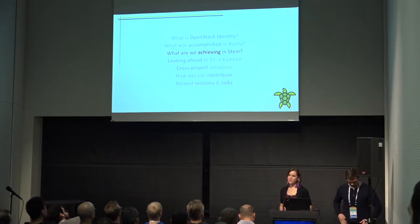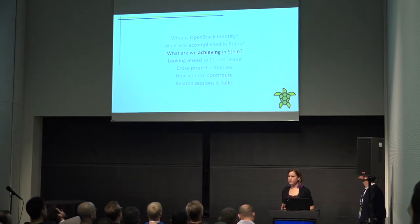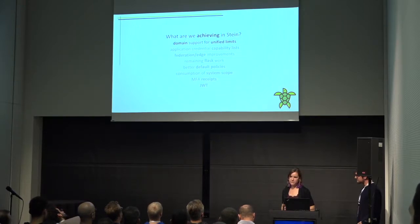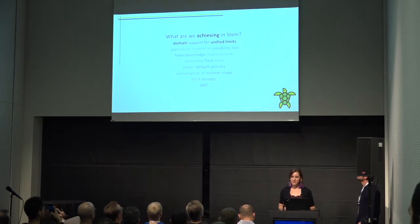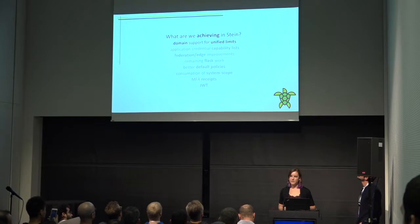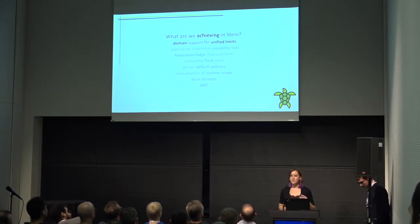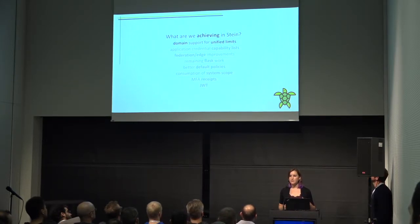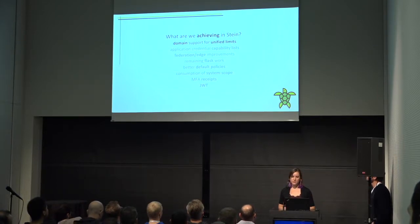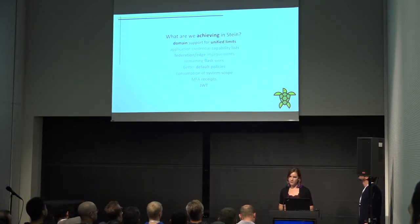For this Stein cycle, we're going to be building on all the work we did for Unified Limits last cycle by adding domain support for Unified Limits. The two-level limit hierarchy that we have now currently only supports two levels of projects. We'd like it to be so that the top level could be a domain, since that's a pretty common way of organizing your resources.